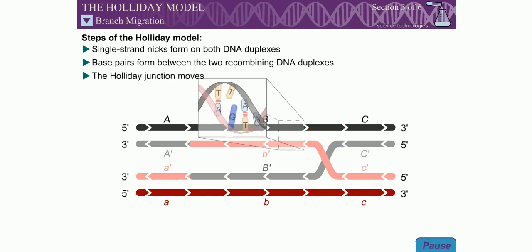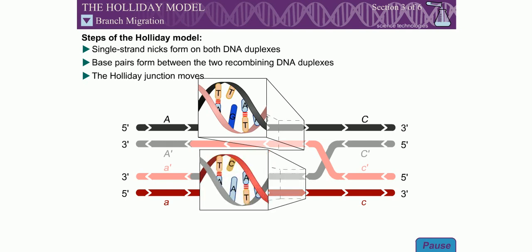Different alleles of the same gene carry small sequence differences. During branch migration through these regions of sequence difference, DNA duplexes are formed carrying one or a few sequence mismatches. These regions are called heteroduplex DNA.